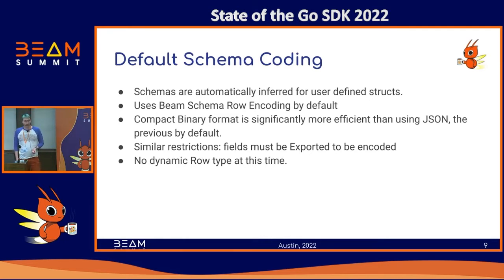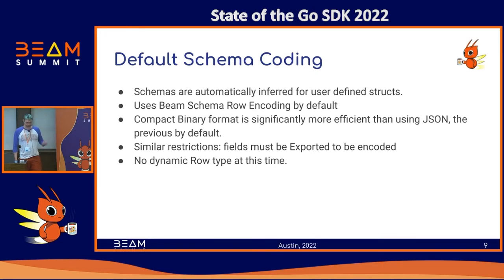Currently, the Go SDK implements schemas implicitly. So if you're using your own struct type, the fields will become fields in the row encoder, and so on recursively. You don't need to worry about it most of the time.